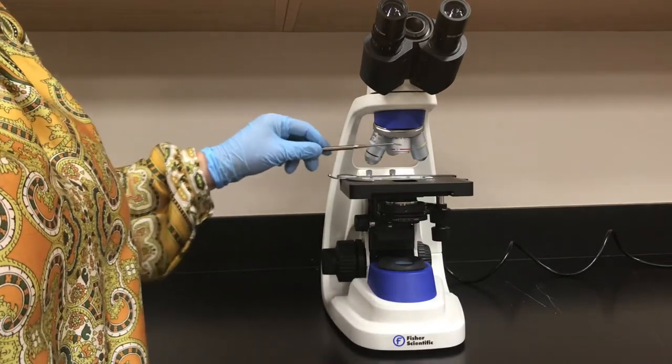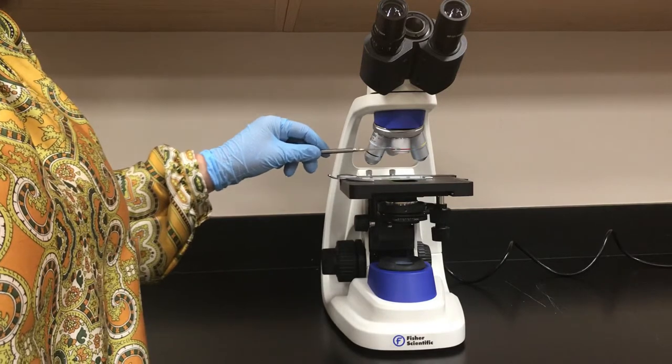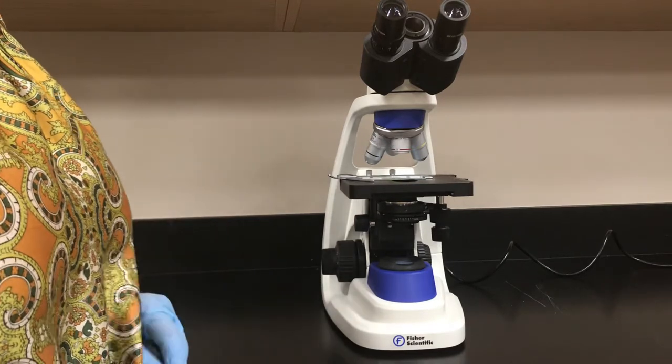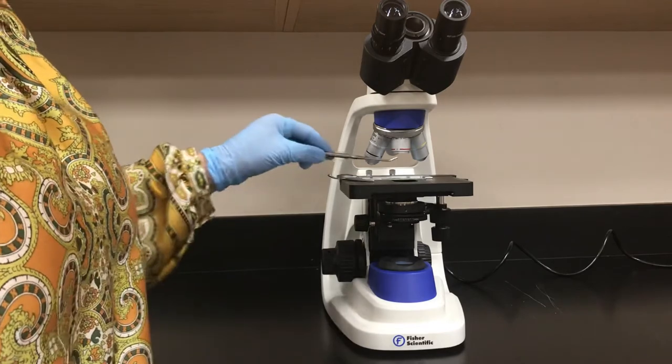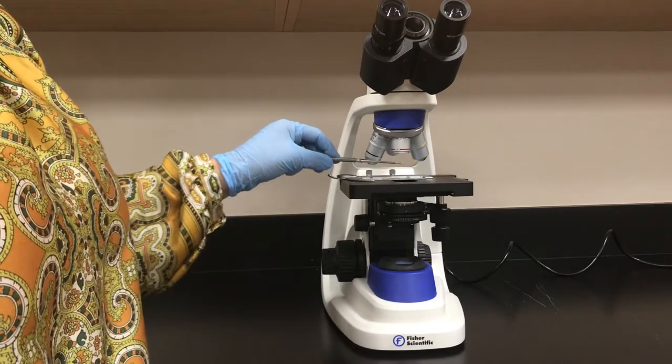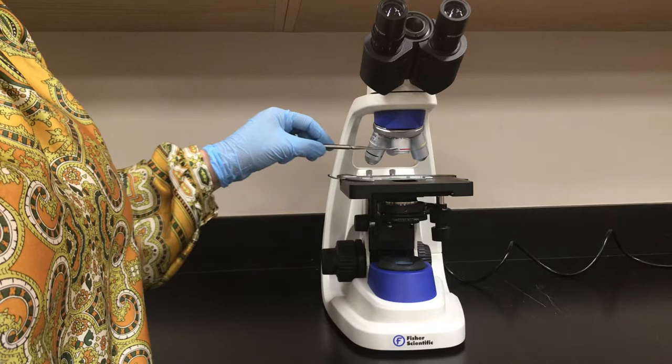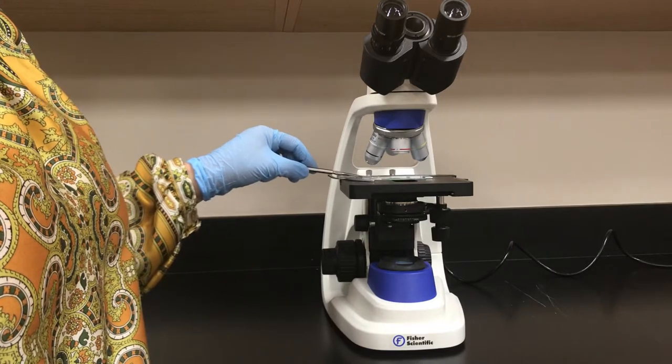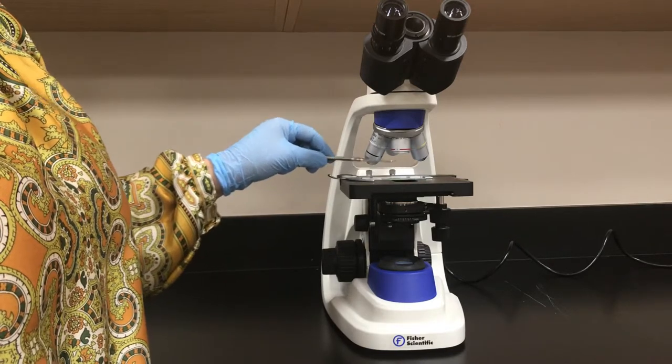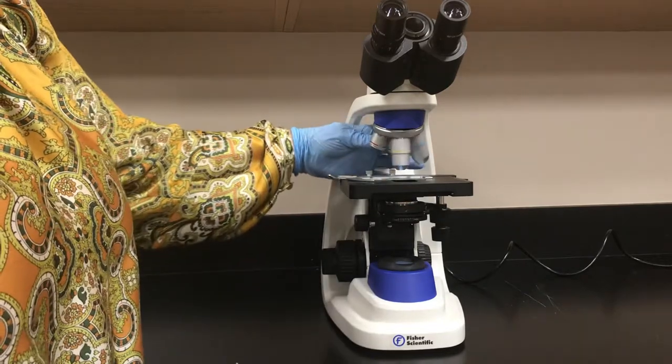This is the shortest one, red color coded. We call it the scanning objective. The working distance, as you see, between the objective lens and the microscope slide is quite larger compared to the other ones.